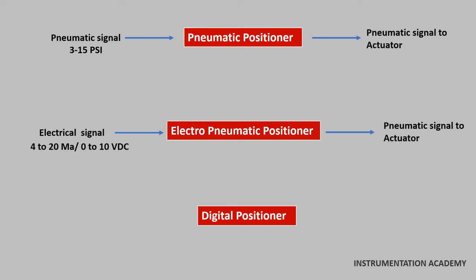A digital valve positioner receives an electric signal, typically 4 to 20 mA, HART, Profibus etc from a controller. It then sends a corresponding output pneumatic signal to a pneumatic valve actuator.